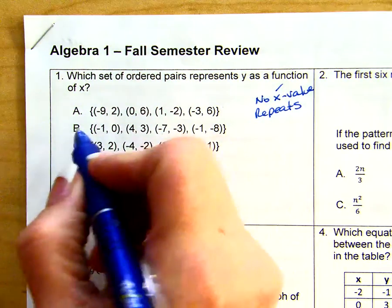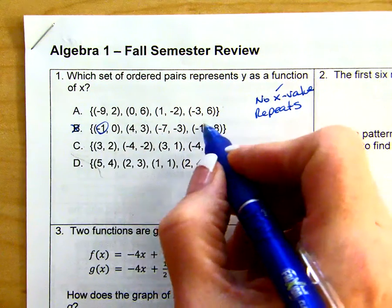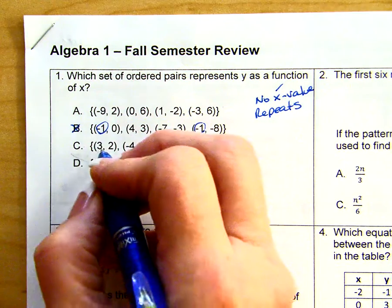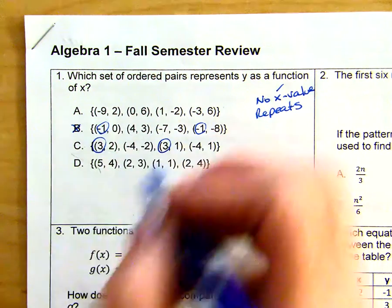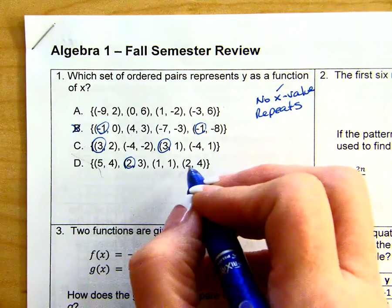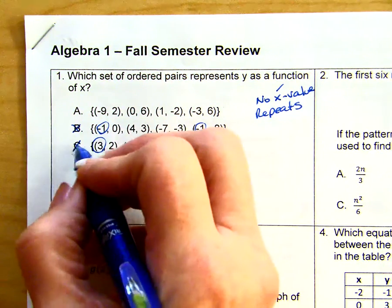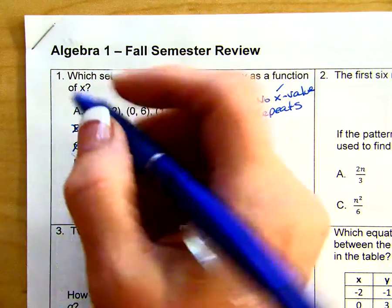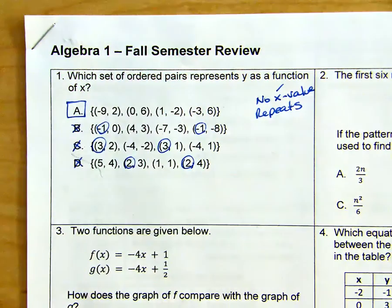We do have an x value repeating in answer choice B. For answer choice C, we do have the x value here of three repeating. And in the final answer choice D, we have two repeating. So neither B, C, or D can be our answer because they do have x values that repeat. So our answer choice is A.